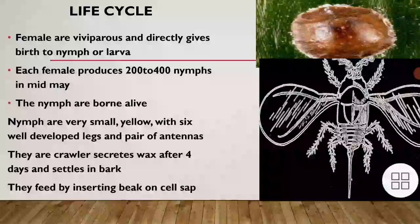Females are viviparous and directly give birth to nymphs or larvae. Each female produces 200 to 400 nymphs in mid-May. The nymphs are born alive. They are very small, yellow, with six well-developed legs and a pair of antennae. They are crawlers and secrete wax after four days and settle in the bark.